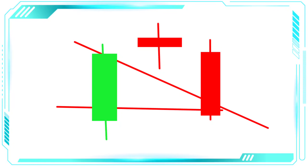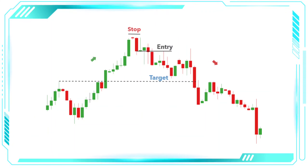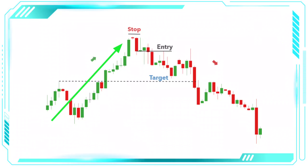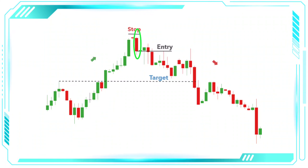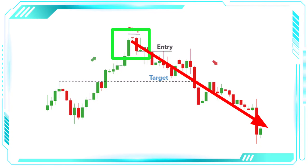Traders typically look for confirmation of the pattern, such as a break below a trend line or support level, before entering a short trade. On the chart, we can see an uptrend with a long bullish candle. The second candle is a small-bodied doji, indicating indecision. The third candle is a bearish candle that closes below the midpoint of the first candle. This confirms the evening star pattern and suggests a potential reversal in the trend.